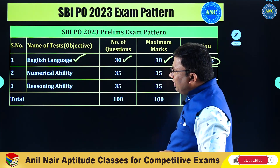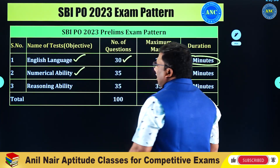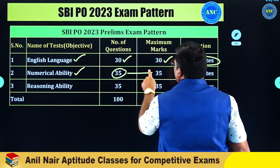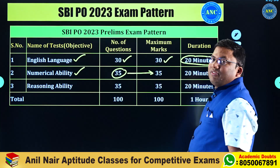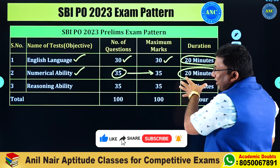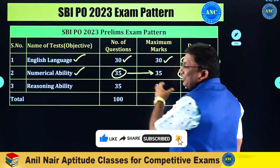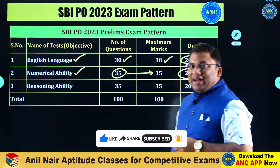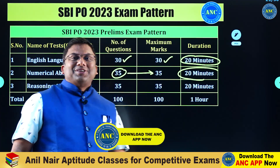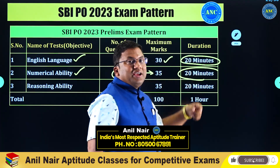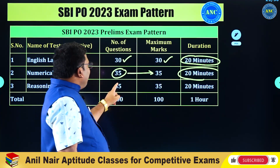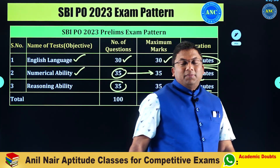The duration given for this section is 20 minutes. Next comes quantitative aptitude, which we call numerical ability. There will be 35 questions, each question one mark — 35 marks. The time limit is 20 minutes. Comparing duration versus number of questions, you do not even have one minute to solve each question. 30 questions must be attempted in 20 minutes, and 35 questions must be attempted in 20 minutes.